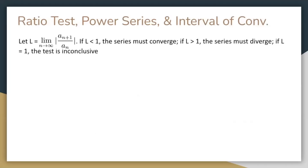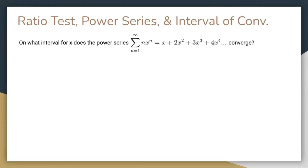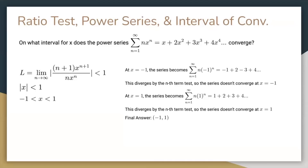The ratio test. Let L equal the limit as n approaches infinity of the absolute value of a_(n+1) over a_n. If L is less than 1, the series must converge. If L is greater than 1, the series must diverge. If L equals 1, this test is inconclusive. This test can be used to determine the interval of convergence of power series, such as x plus 2x squared plus 3x cubed plus 4x to the fourth and so on. If we evaluate L, we will get that it is just equal to the absolute value of x. This must be less than 1, so we get the open interval from negative 1 to 1. Now we must check the endpoints, x equals negative 1 and 1. At those values, the power series becomes negative 1 plus 2 minus 3 plus 4 dot dot dot, and 1 plus 2 plus 3 plus 4 dot dot dot, respectively. Due to the nth term test, neither of these converges, so the final answer is just the open interval from negative 1 to 1. The ratio test, power series, and interval of convergence are very important concepts. Make sure you remember them.